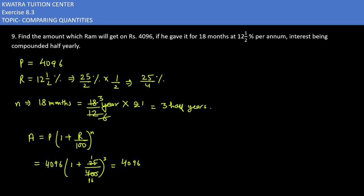400 divided by 25 gives 16. So 1 plus 1/16 cubed. Now what you can do is take LCM of the values: 16 plus 1 over 16 whole cube. So the value you have is 4096 and 17/16 thrice, which means 3 times.